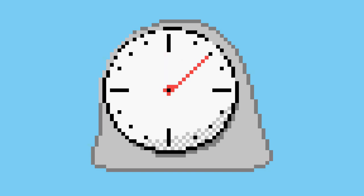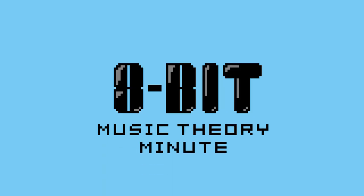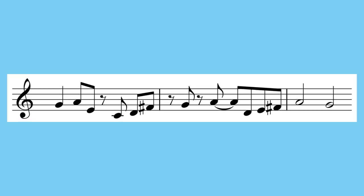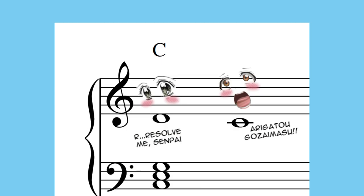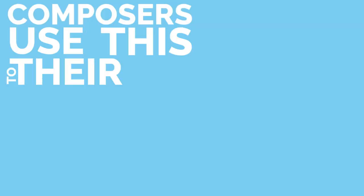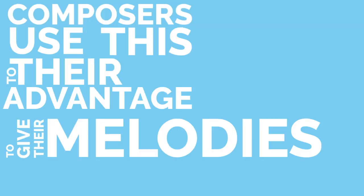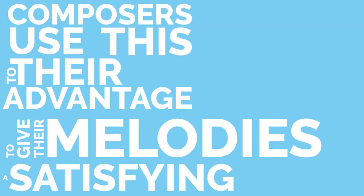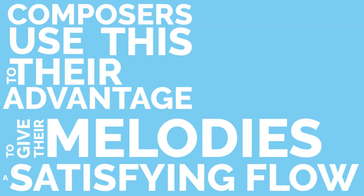This is Music Theory Minute, a weekly series diving into different aspects of a monthly topic. This month we're talking about structuring a melody. Last time we talked about how certain notes in a key feel resolved and certain notes don't. Composers use this to their advantage to give their melodies a satisfying flow.